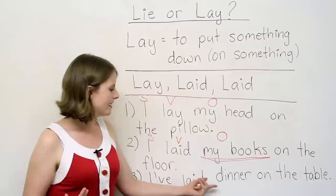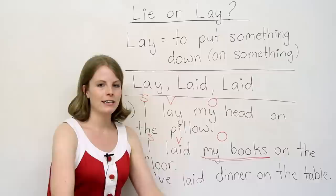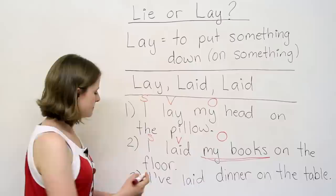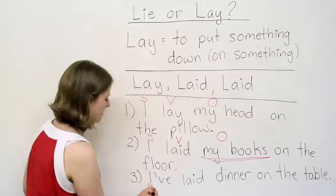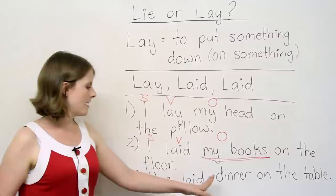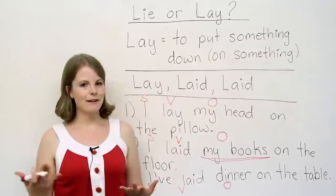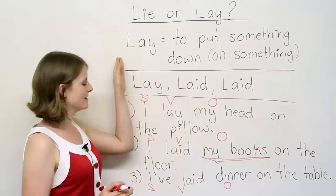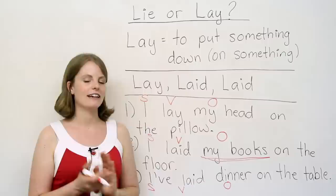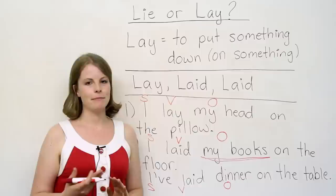So number three. In this case, we're using the present perfect. I've laid dinner on the table. Meaning there's a table, and I put dinner down on the table. So in this case, what's the subject? I. What's the verb? Have laid. And what's the object? Dinner. So this is almost like a mathematical formula you can remember. Anytime you use lay, you need a verb and an object. You always need an object.